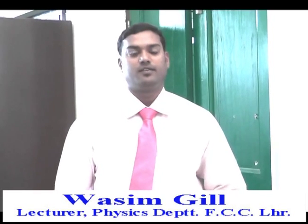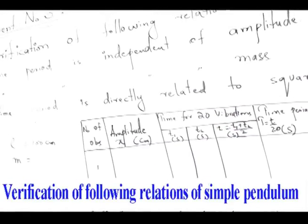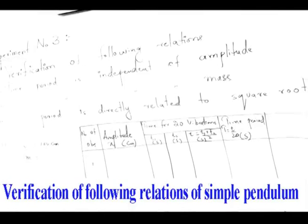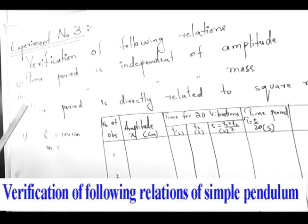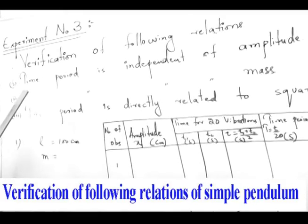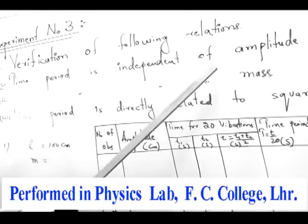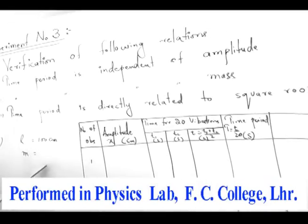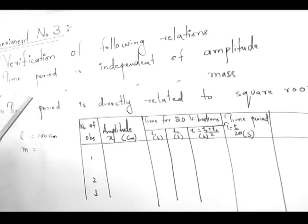We will study the relationships of the simple pendulum. There are three relationships, or we can say there are three laws of the simple pendulum. The first one is that the time period is independent of the amplitude. The second one is that the time period is independent of the mass.